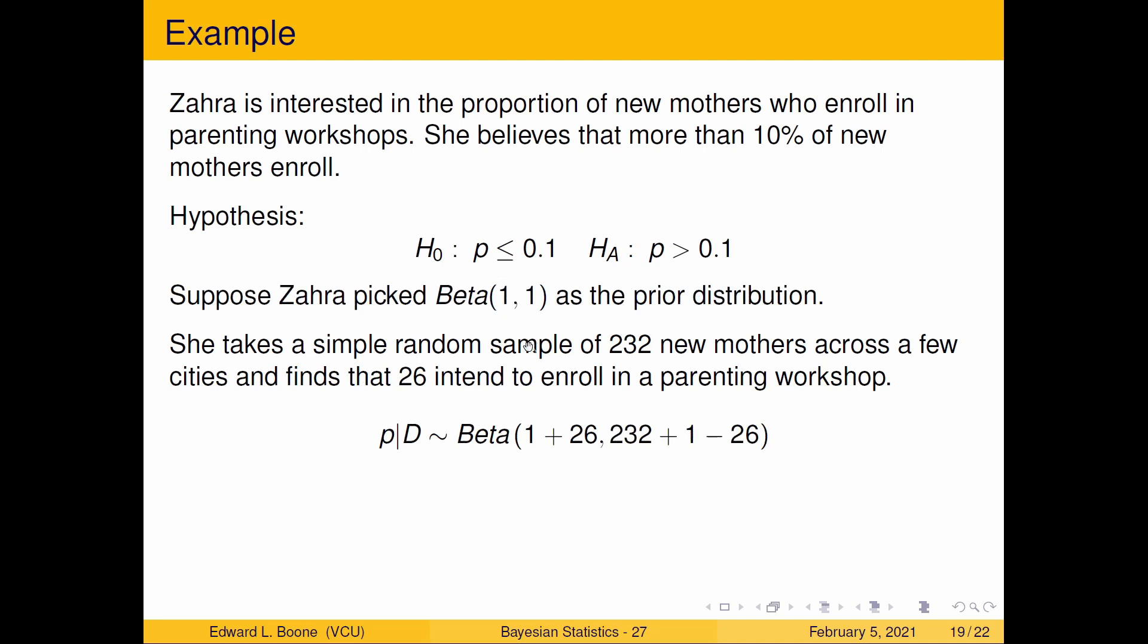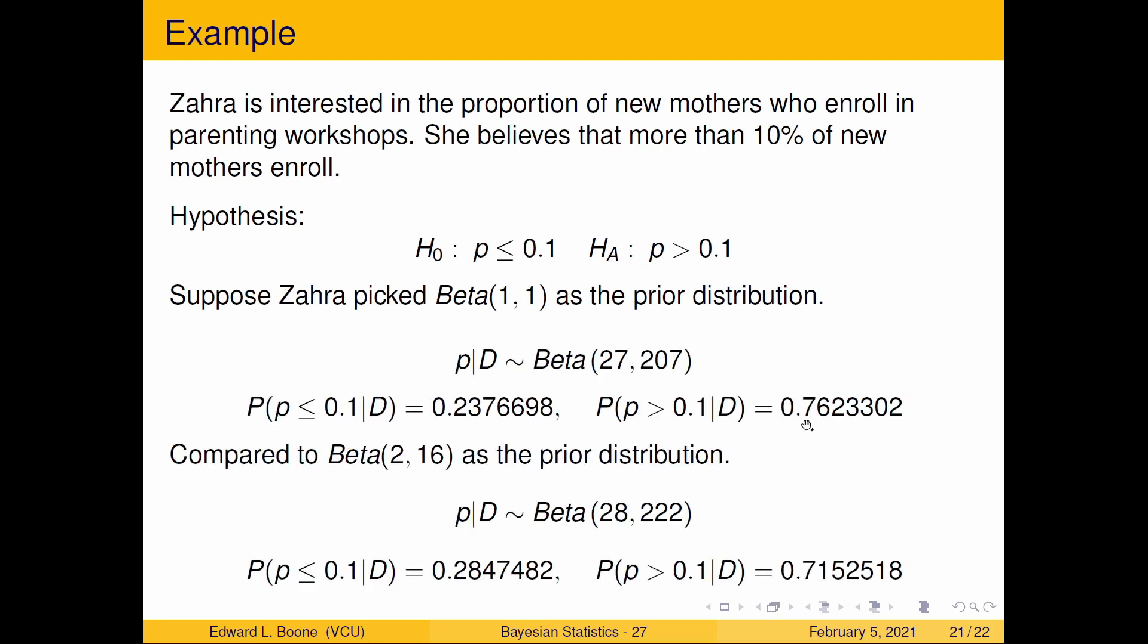Let's go back to the Beta(1,1). What if we had used that? You plug in a one here and a one here, still 232 and 26. That gives us a Beta(27, 207). Here's the probabilities we get: 0.23 and 0.76. This one is leaning towards the alternative because we told it that at the beginning. If I put them next to each other, this one is leaning towards the alternative just a little bit more than this one because this one's a little more balanced around the hypothesis value.